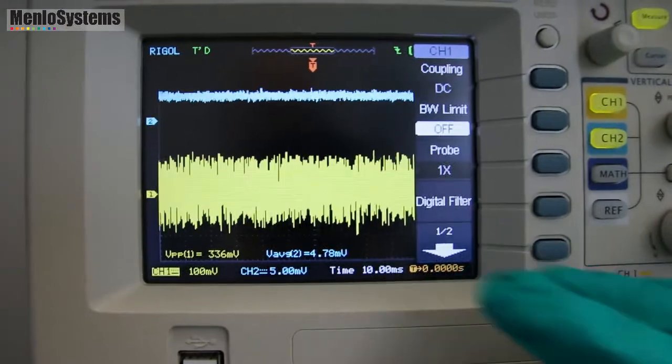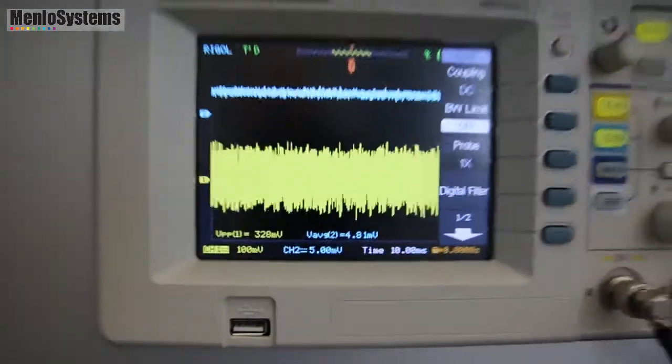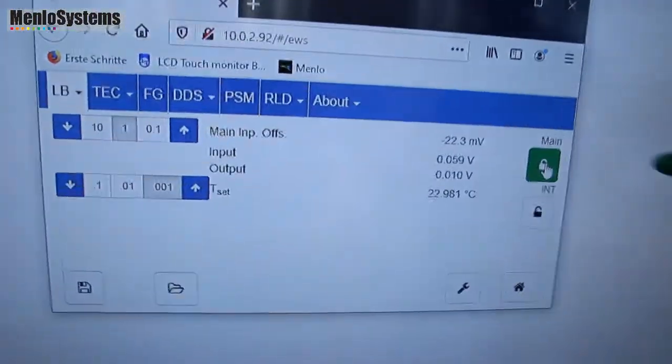Transmission goes up. And you see that here is the in-loop error signal and this is the transmission. And you see here that now the system is basically engaged.